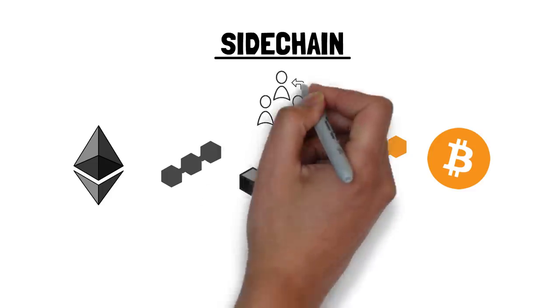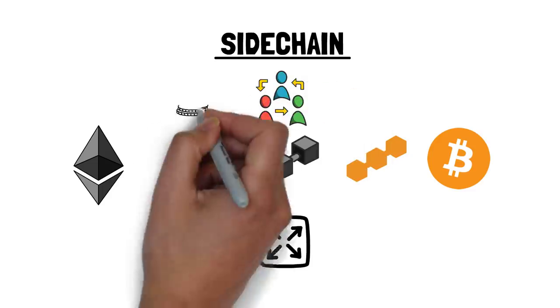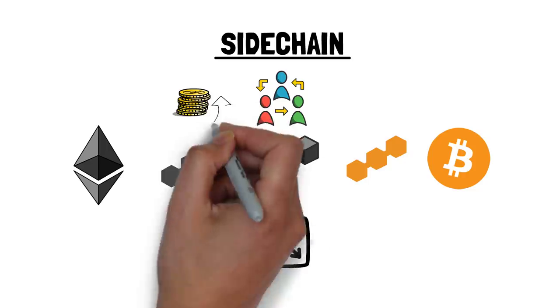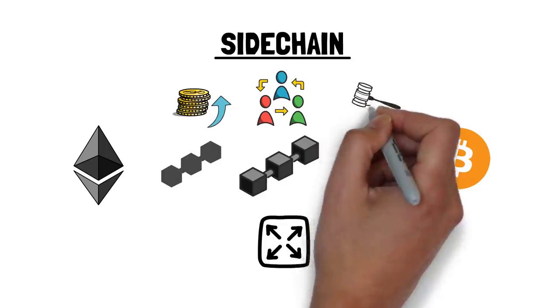Sidechains have their own consensus mechanisms, usually in the form of proof of stake, delegated proof of stake or proof of authority.